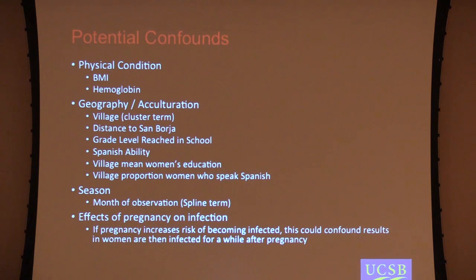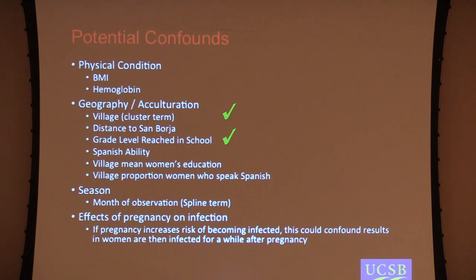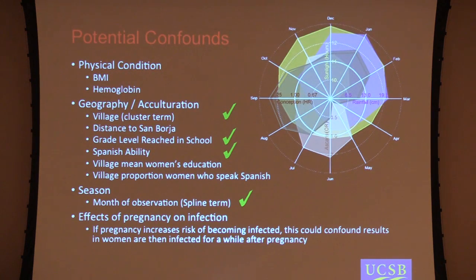We do see clustering by village. We do see an effect of education, where women with more education have longer interbirth intervals, and Spanish ability as well, which is closely related to education. We do see some seasonality. But none of these things really affect what I'm going to talk about next — the effect of the helminths — they don't change much when you control for these factors.